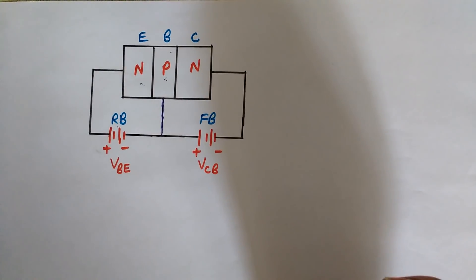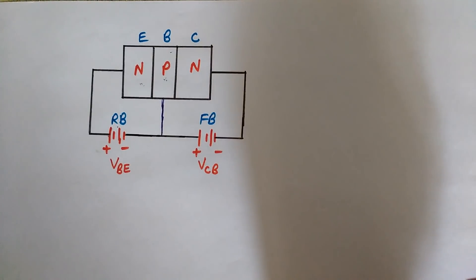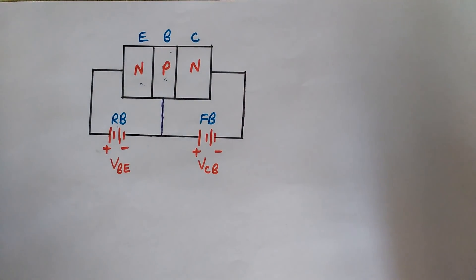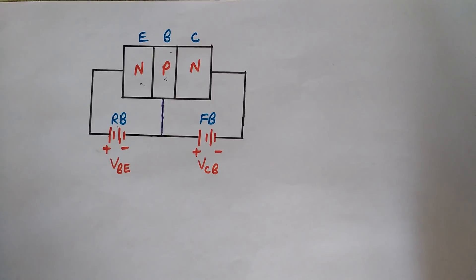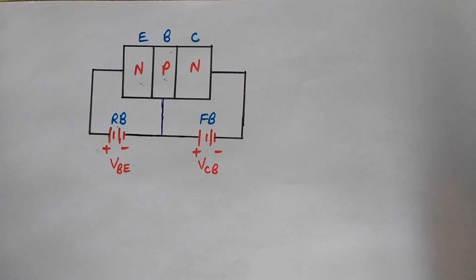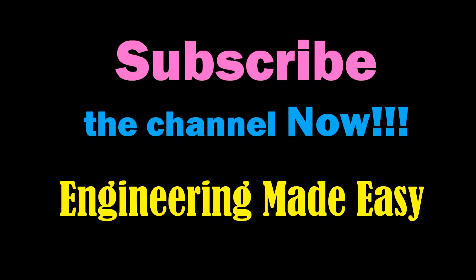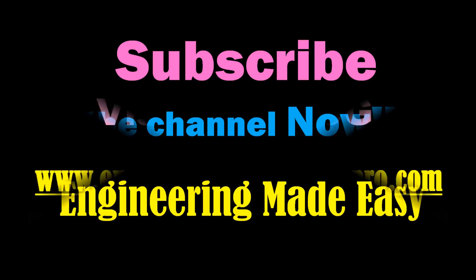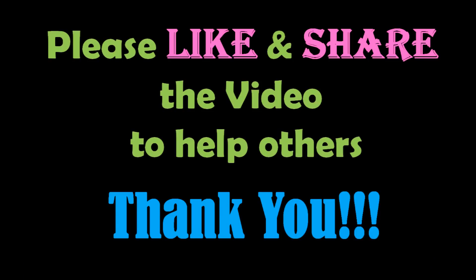To summarize, the four modes of operation are: active mode, saturation mode, cutoff mode, and reverse active mode. Never use a transistor in reverse active mode. In the next videos we will discuss more points related to BJT transistors, and in further lectures we will also cover MOSFETs, FETs, CMOS, etc. Keep watching Engineering Made Easy — please subscribe, like, and share the video if you liked it. For more detailed information you can visit the blog. See you soon in the next video!